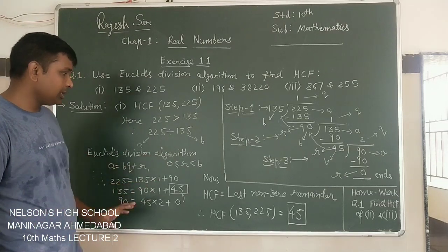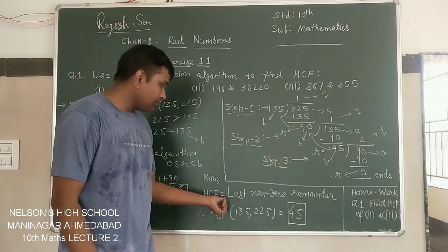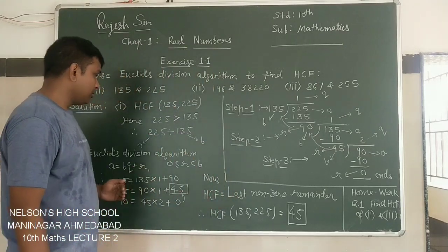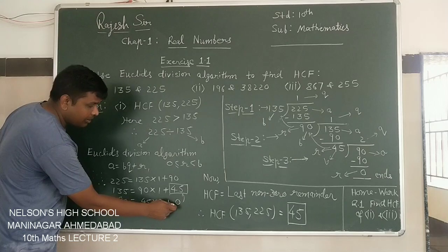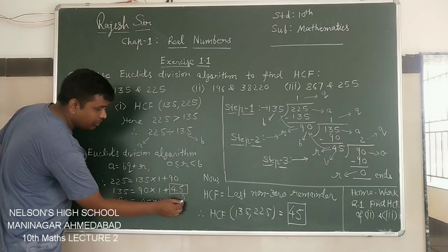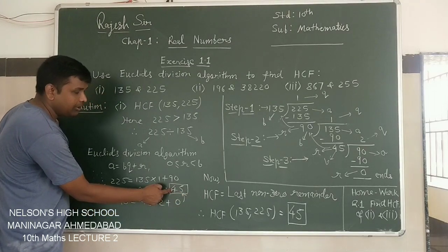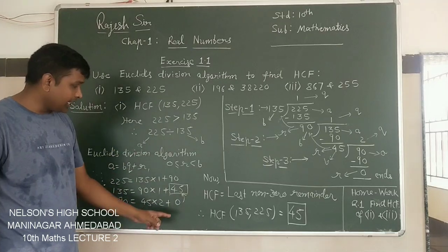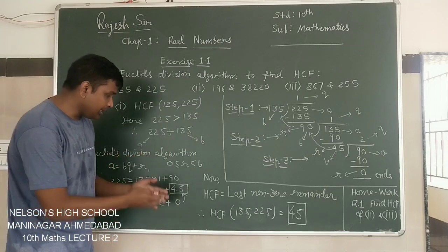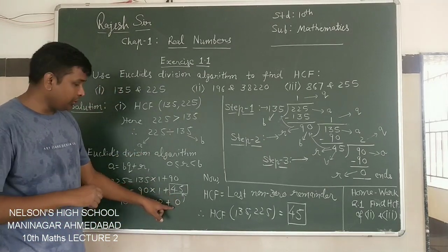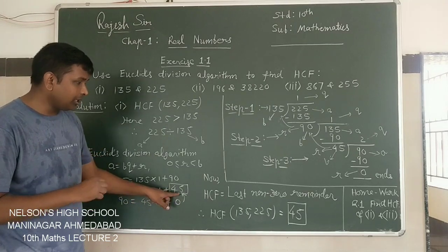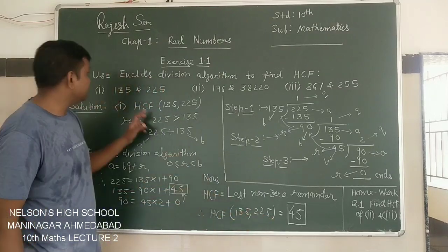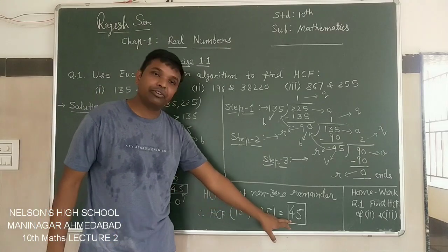How many steps we have to do? Till we are getting 0 as remainder at the end. When you are getting the remainder as 0, there the steps will end. Step 1, Step 2, Step 3 we have shown in Euclid's algorithm. Now to find out HCF, what we have to remember? HCF equals to last non-zero remainder. At the end you will get always 0, but before 0, this 45 is last non-zero remainder. Step 1 had 90 as remainder, Step 2 had 45 remainder, Step 3 has 0. So our HCF of 135 and 225 will be last non-zero remainder 45.